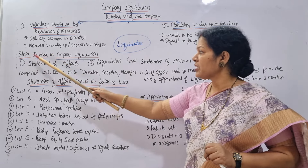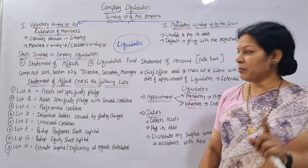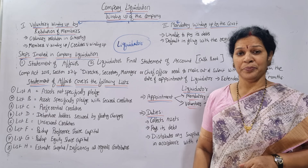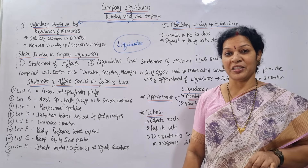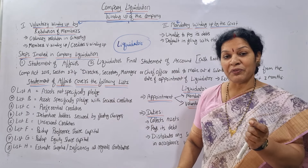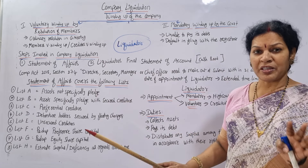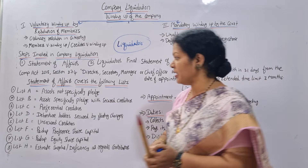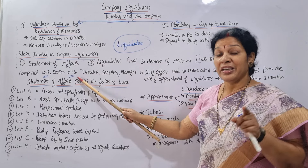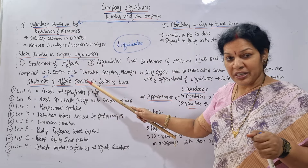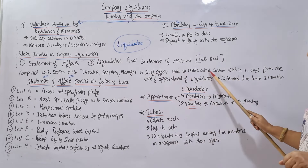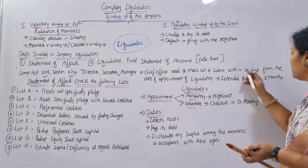Step number one is that we have to prepare the Statement of Affairs. You may have heard of this in single entry accounts from incomplete records, where we had an opening and closing statement of affairs. Similarly, here we also prepare a Statement of Affairs. As per the Companies Act 2013, Section 274, it defines who can prepare the Statement of Affairs — it can be prepared under the guidance of directors, secretary, manager, or chief officer. They need to make out and submit the Statement of Affairs within 21 days.